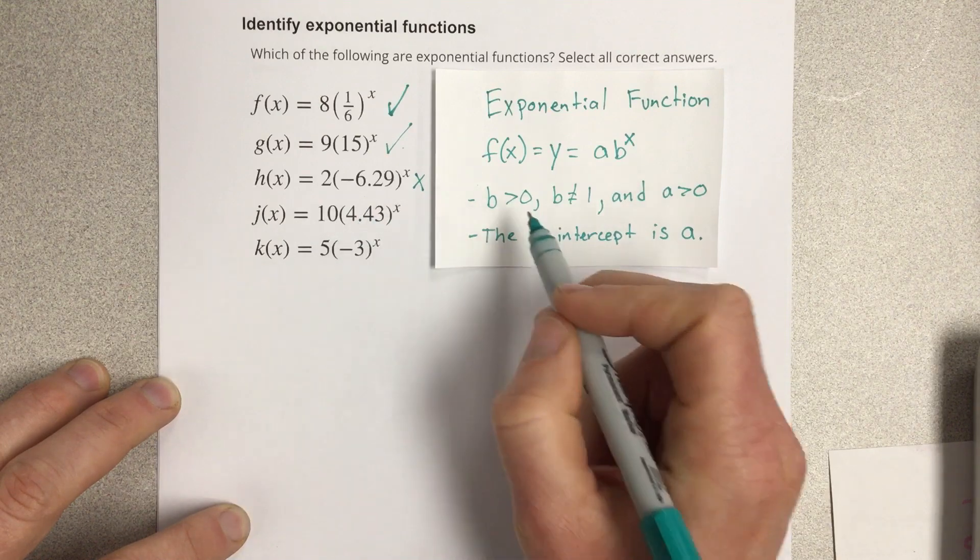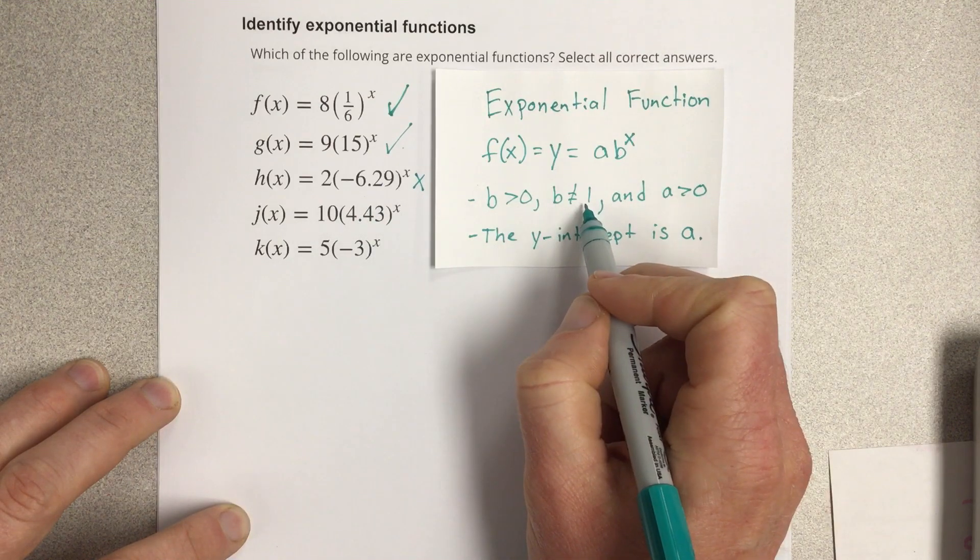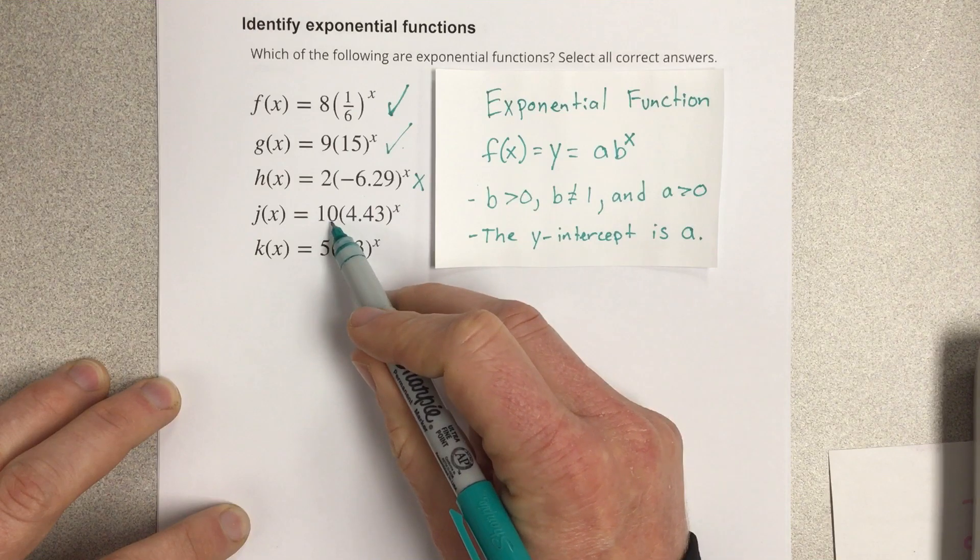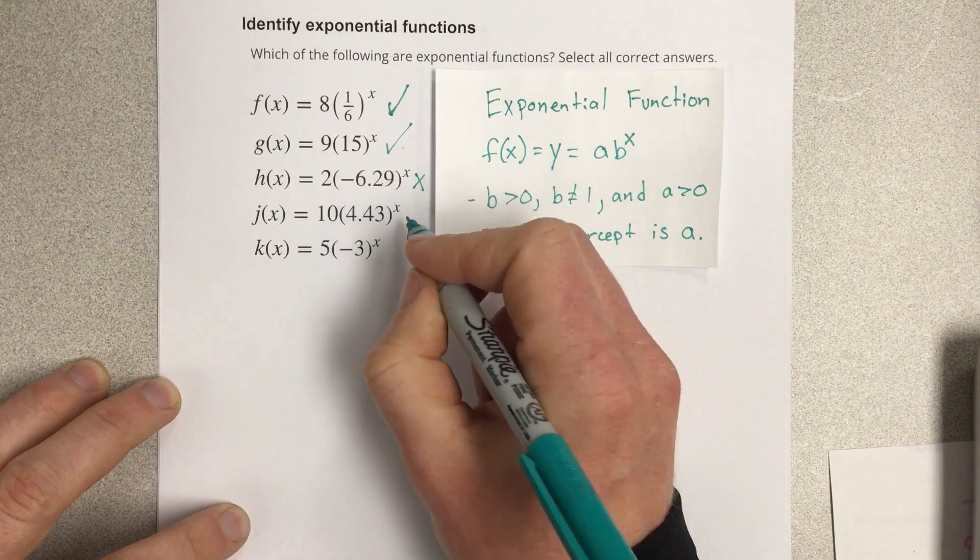4.43, that's greater than zero and is not equal to one. a is greater than zero, it's ten, so this is an exponential.